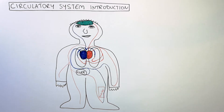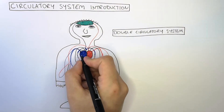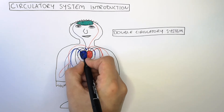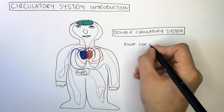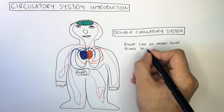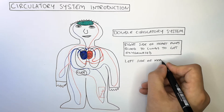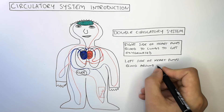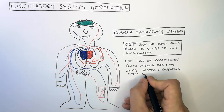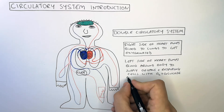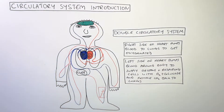We call our circulatory system a double circulatory system because we have two circuits connected via the right and left side of the heart, whereby the right side pumps blood to the lungs to get oxygenated, whereas the left side pumps blood around the body to supply organs and respiring cells with oxygen and glucose, and remove CO2 back to the lungs to be breathed out.